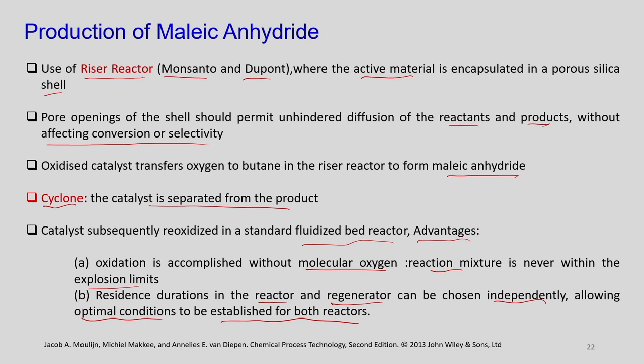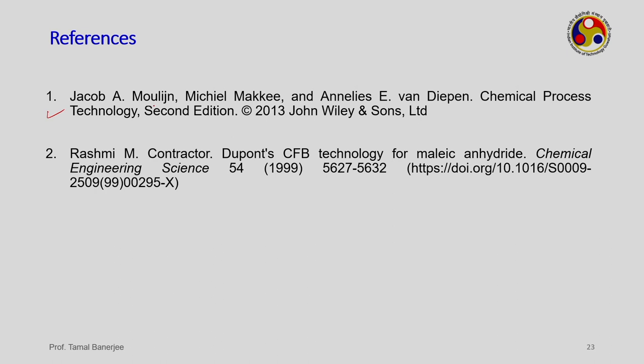This new invention — the riser reactor — was developed jointly by Monsanto and DuPont. DuPont developed the catalyst and Monsanto devised the flow scheme. Nowadays, maleic anhydride production uses the Monsanto-DuPont circulating fluidized bed (CFB) scheme. Please refer to Jakub Moulijn's textbook for more details on the ethylene oxide and maleic anhydride processes, and to the DuPont paper on circulating fluidized bed reactor technology for maleic anhydride for process conditions and parameter optimization.